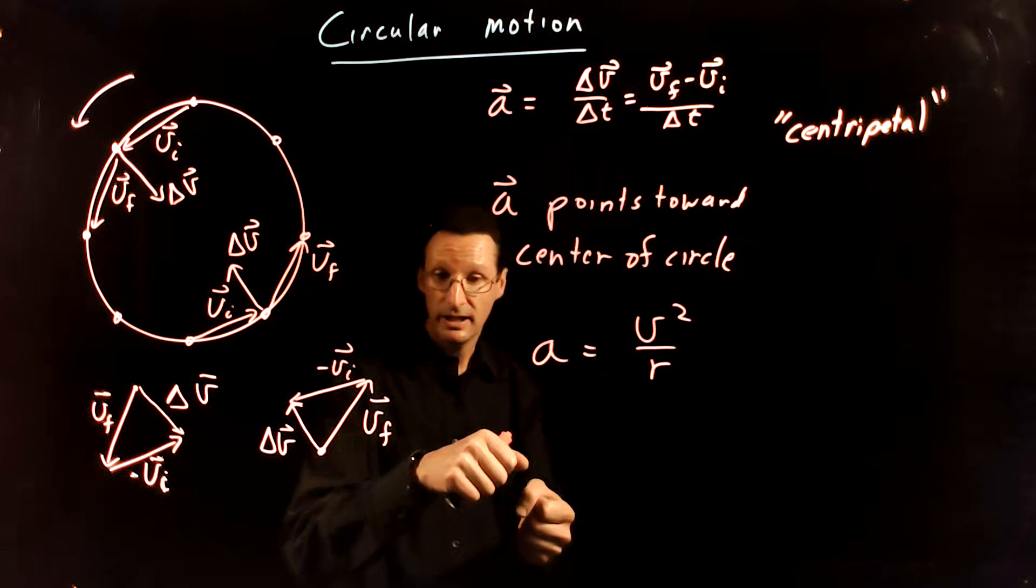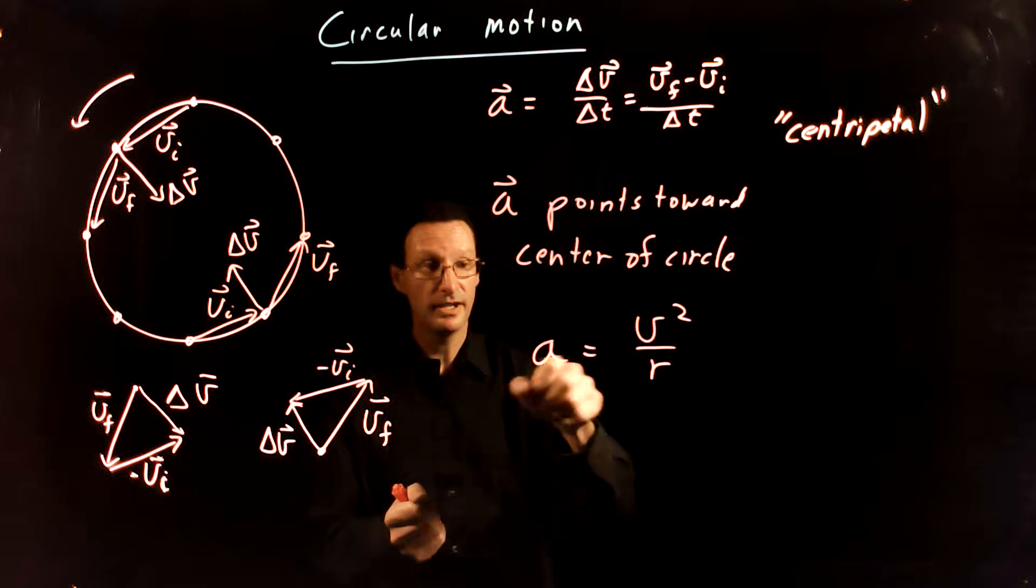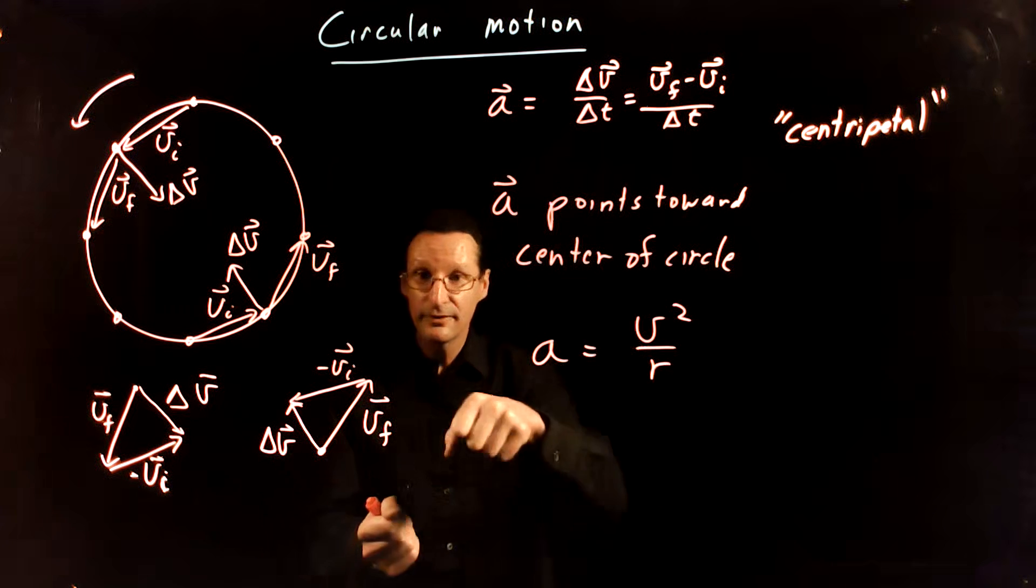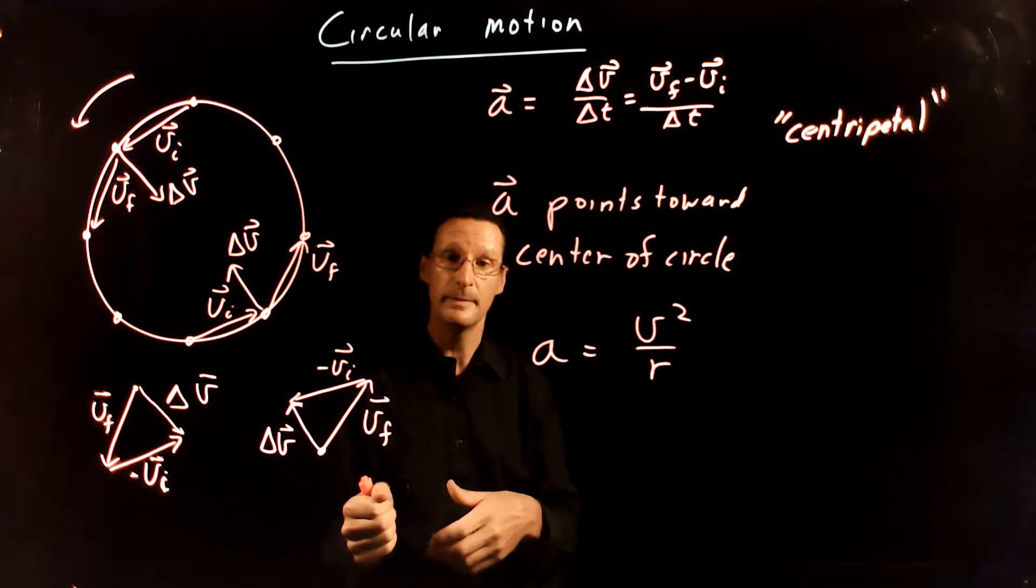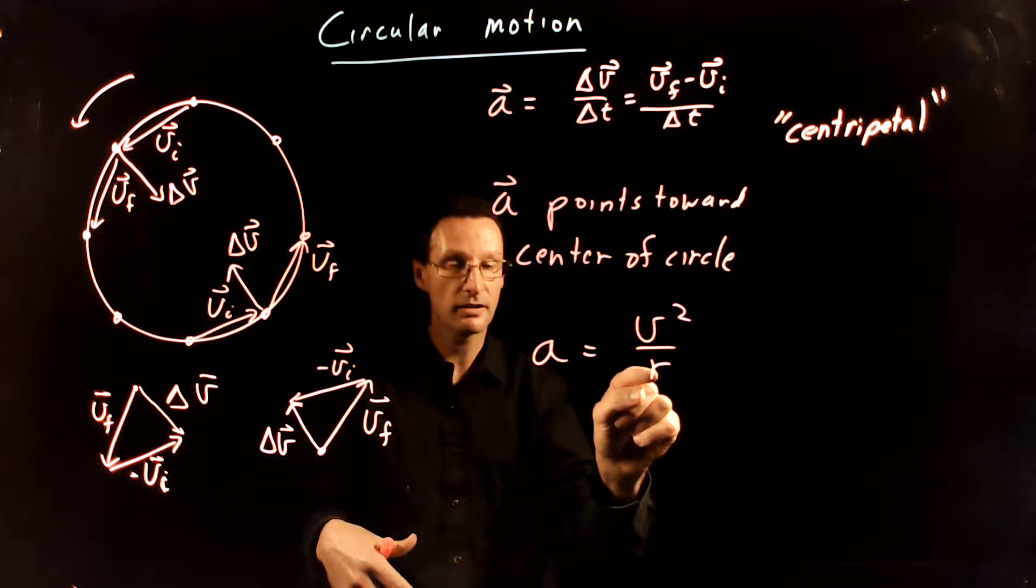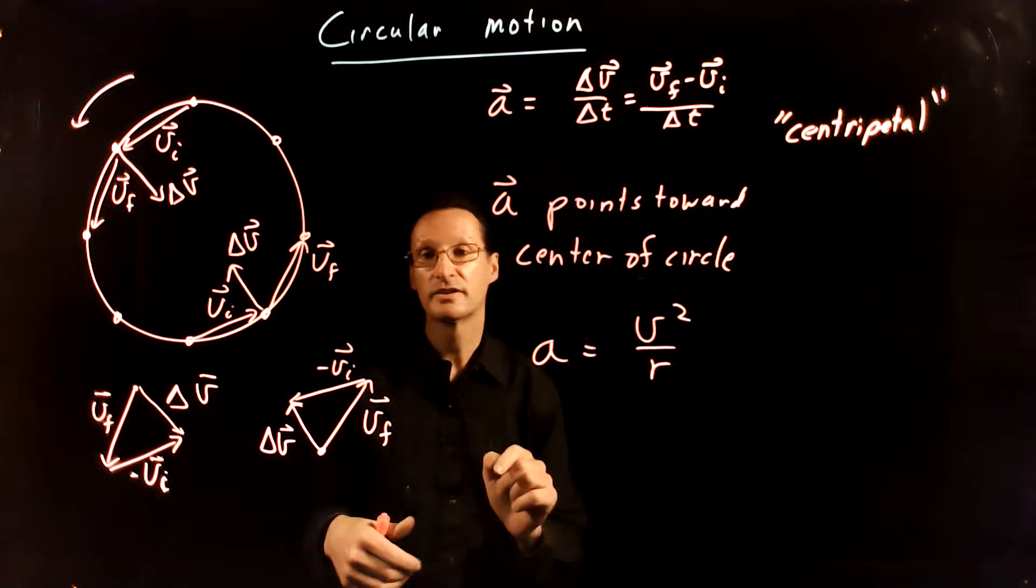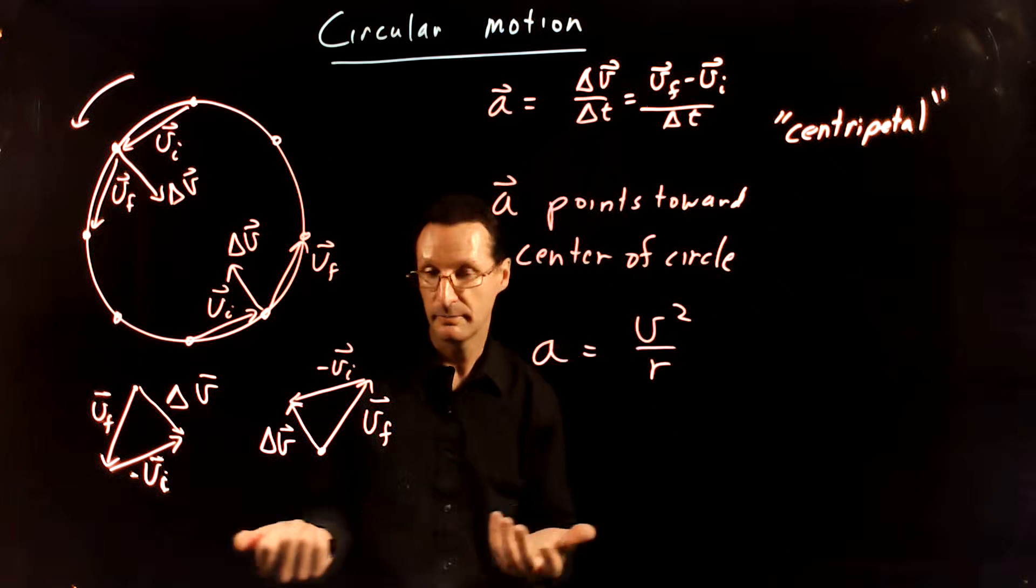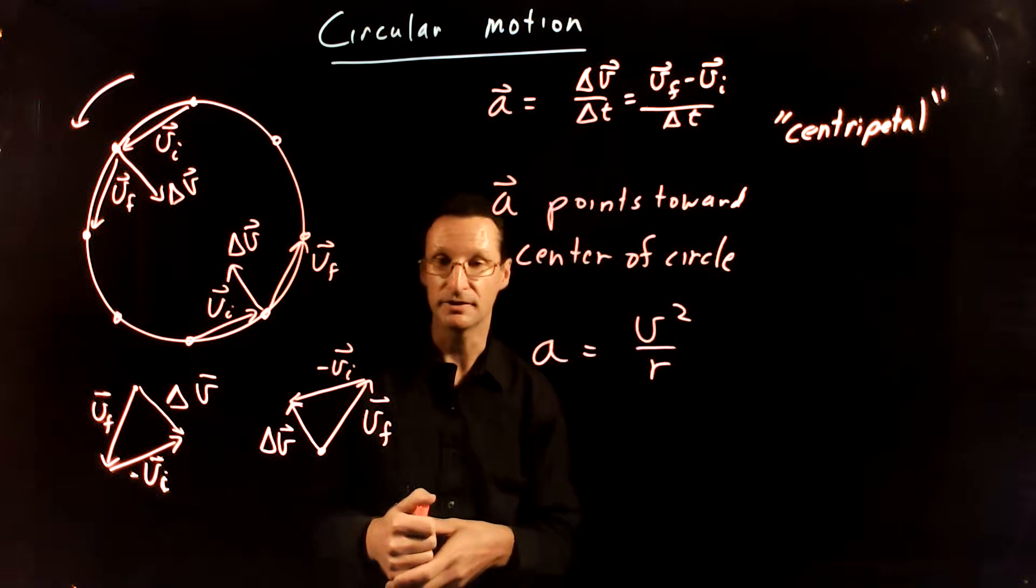Alternatively, if you turn into a tighter turn, if you reduce the radius of your circle that you're traveling in, you're also going to feel that acceleration bigger. Because a smaller r corresponds with a larger term here, which will make acceleration larger.